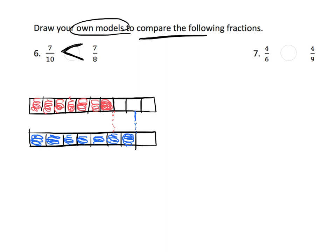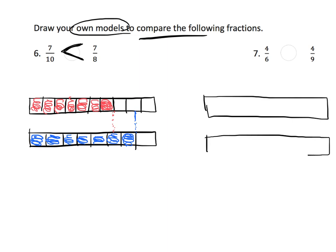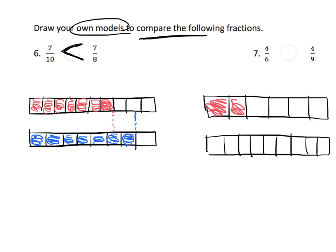And then in the same kind of way, let's do two more tape diagrams. This first one I'm going to cut into sixths, and this next one into ninths. For 4 sixths I'll shade in 1 sixth, 2 sixths, 3 sixths, 4 sixths. For 4 ninths I'll shade in 1 ninth, 2 ninths, 3 ninths, 4 ninths. We can definitely see that 4 sixths is bigger than 4 ninths.